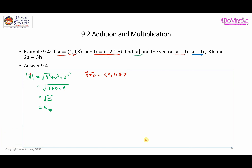Next, vector A minus vector B equals A plus the negative of B, so (4, 0, 3) plus (2, -1, -5). Adding the components: 4 + 2 = 6, 0 + (-1) = -1, and 3 + (-5) = -2. So A - B = (6, -1, -2).